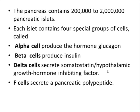Beta cells are responsible for the production of insulin. The delta cells secrete somatostatin, also known as the hypothalamic growth hormone inhibiting factor, which inhibits glucagon and insulin secretion. The F cells secrete a pancreatic polypeptide that is released into the blood after a meal and inhibits somatostatin secretion, gallbladder contraction, and the secretion of pancreatic digestive enzymes.